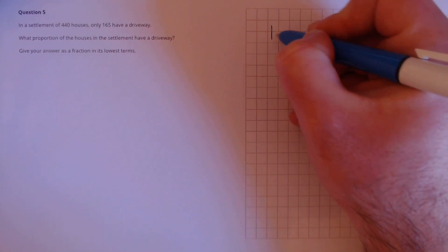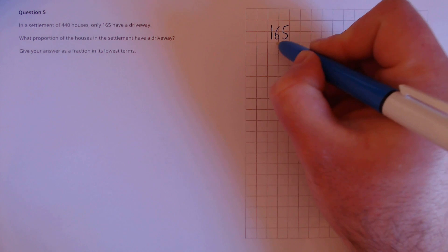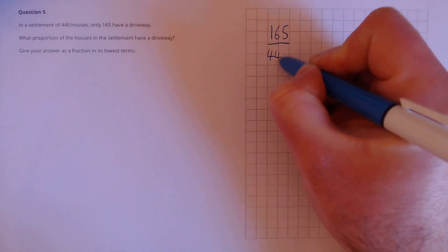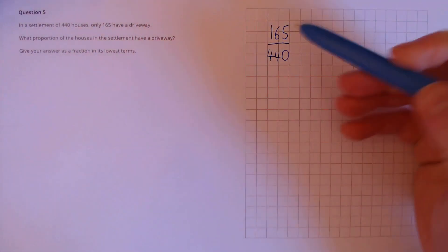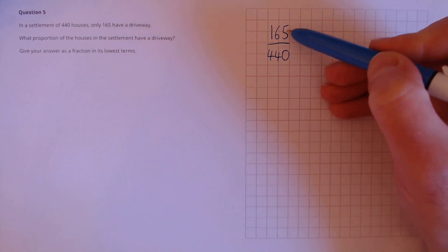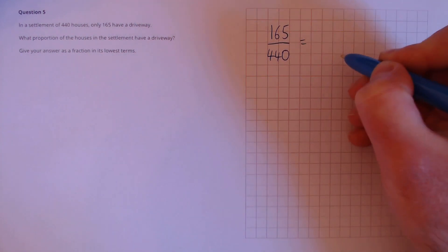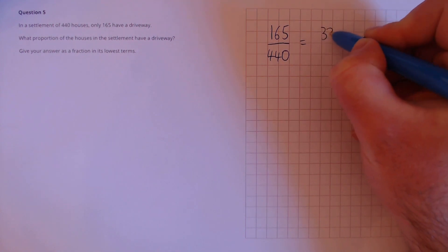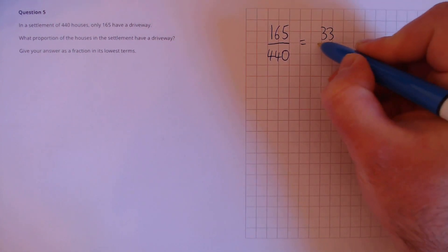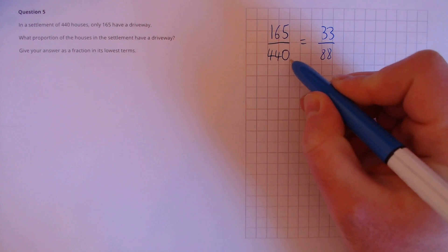So to calculate proportion we have the number with a driveway divided by the total, 440. We spot that this can be divided by 5. This number ends in a 5 and this number ends in a 0. So we can simplify this down to 33, that's 165 divided by 5, over 88, which is 440 divided by 5.